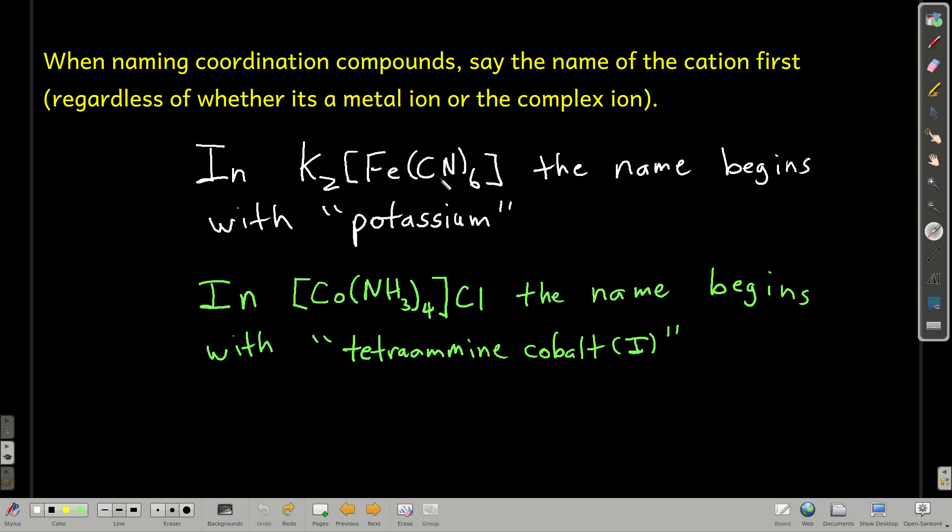First, when you're naming a coordination compound, you say the name of the cation first and then the name of the anion. Sometimes the cation can be a metal ion, sometimes it can be the complex ion. For this compound here, the cation is potassium. Just like in ionic compounds, the cation is written first and the anion second. So the potassium is a cation, we start the name with the word potassium.